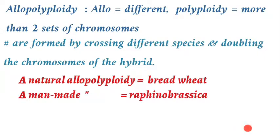Next is allopolyploidy. 'Allo' stands for different, and polyploidy means more than two sets of chromosomes. This condition is formed by crossing different species and then doubling the chromosomes of the resulting hybrid. Here are some examples of naturally occurring allopolyploids.